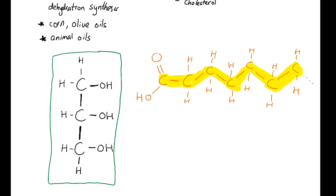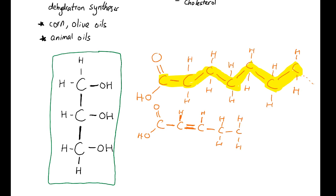Now I'm going to draw a different fatty acid. I'm going to draw a double bond between carbon and carbon. Each carbon still has four covalent bonds. If you focus on each central carbon atom, you will realize they will always have four covalent bonds — either from hydrogen or from carbon. Here I have a fatty acid that has two double bonds along the carbon chain.